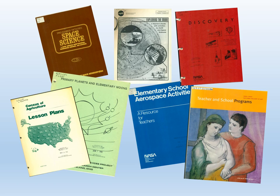For over 200 years, the government has been distributing publications to designated repositories. At first, the deposits consisted of legislative or judicial publications, like the congressional record, the decisions of the courts, the laws and statutes, and the regulations. But as the role of the executive branch expanded, library deposits included the kind of research-based publications that informed the regulatory processes.